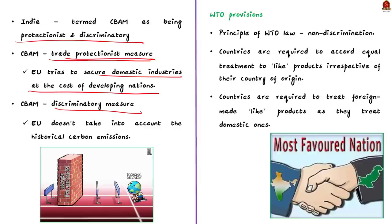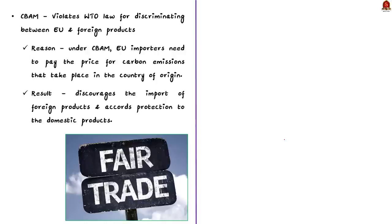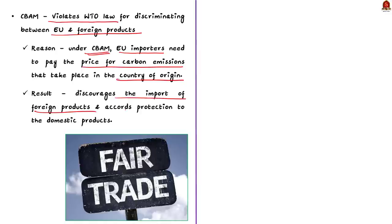The ultimate principle of WTO law is non-discrimination, requiring countries to accord equal treatment to like or same products irrespective of their country of origin, and to treat foreign-made products the same as domestic ones. The author argues that CBAM violates WTO law by discriminating between EU and foreign products, because under CBAM, EU importers must pay for carbon emissions occurring in the country of origin, discouraging imports and protecting domestic products.